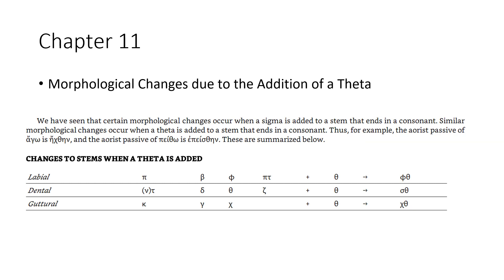For the labials — pi, beta, phi, and pi-tau — plus a theta, you're going to get phi-theta. For dentals — nu, tau, delta, theta, zeta — plus theta, you're going to get sigma-theta. And for gutturals — kappa, gamma, and chi — plus a theta, you're going to get chi-theta.